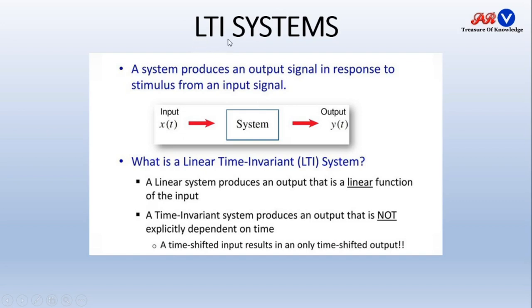LTI means linear time invariant systems. A linear time invariant system — a linear system produces an output that is a linear function of the input. A linear system always produces a linear output with respect to input. If you are increasing input five times, then output will also increase five times. If you are increasing your input ten times, output will increase ten times.